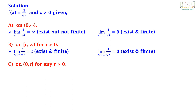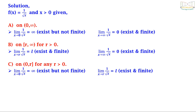Option C says on open-closed (0, r] for any r > 0. Here the limit as x tends to 0 of 1/√x again equals infinity — it exists but is not finite — and the limit as x tends to r of 1/√x equals some finite number L, which exists and is finite. Since the limit as x tends to 0 is not finite, the function is not uniformly continuous on this interval.